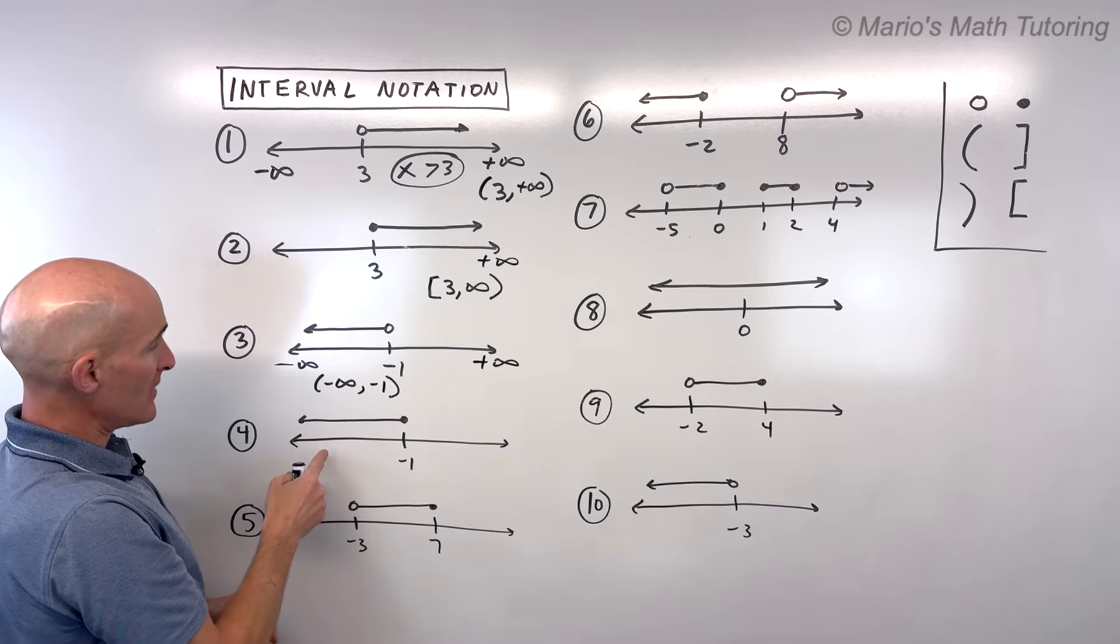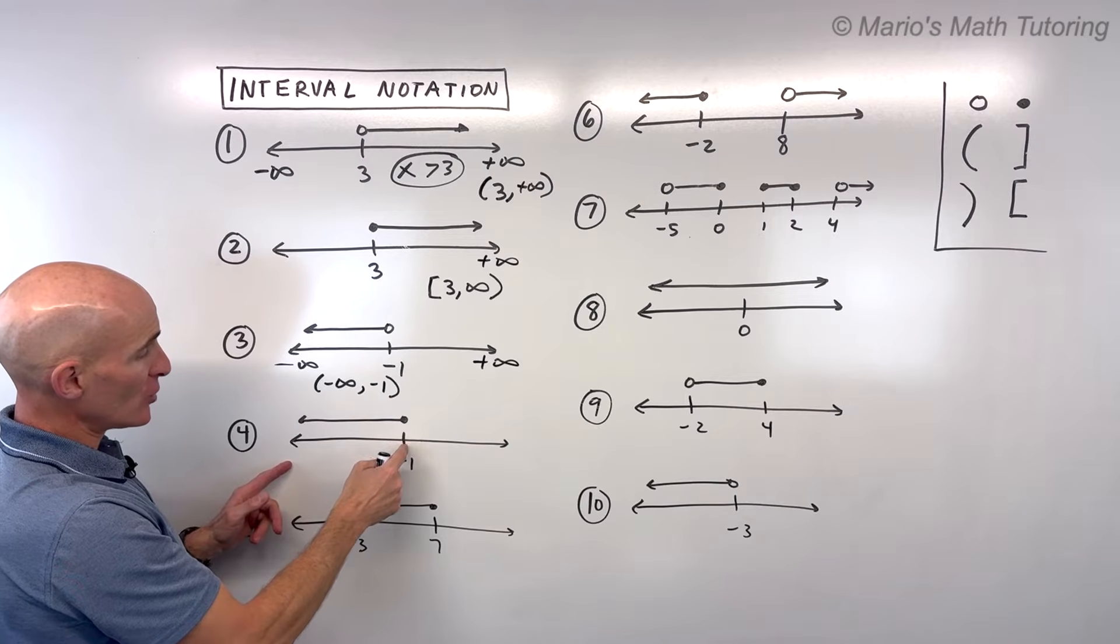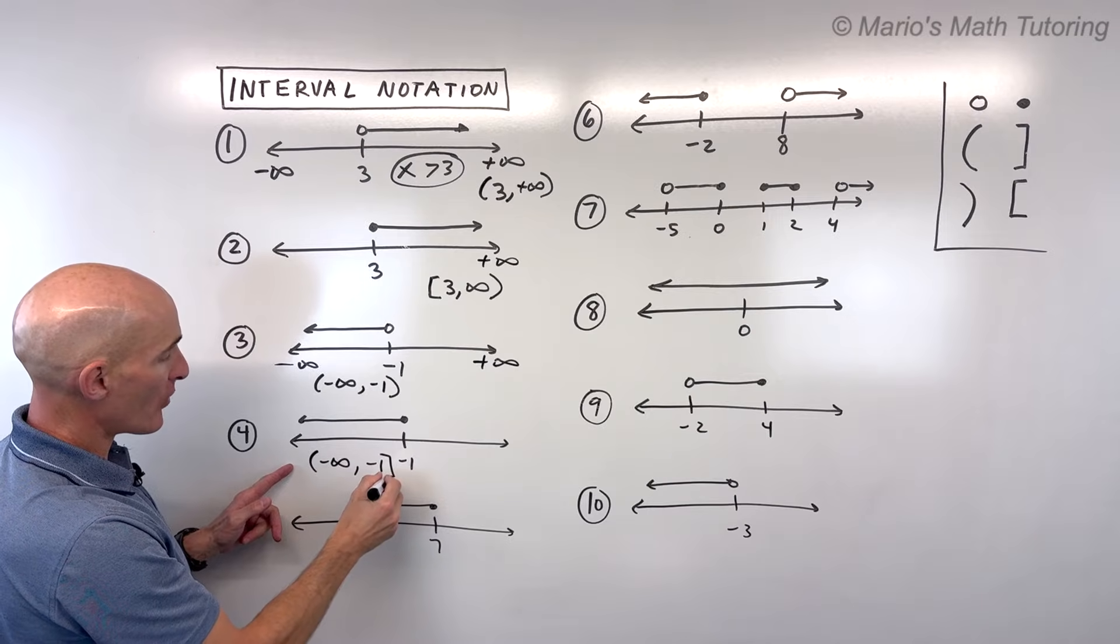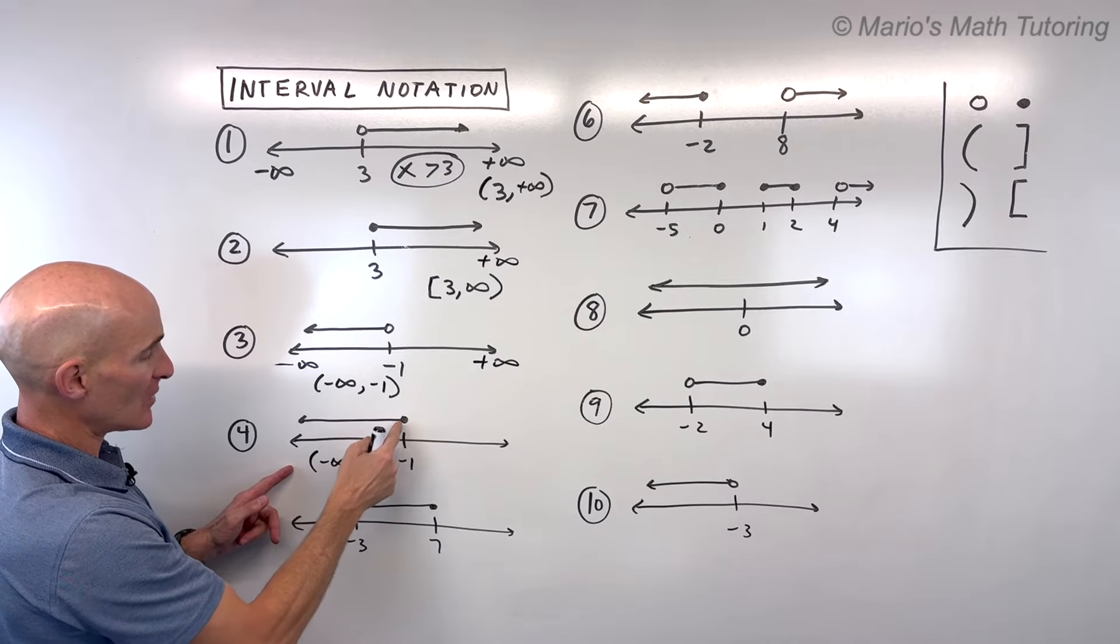Same thing here, open. This one's almost like this one, except for it includes negative 1. So it's going to be the same thing. Negative infinity to negative 1, bracket at negative 1. It includes negative 1.